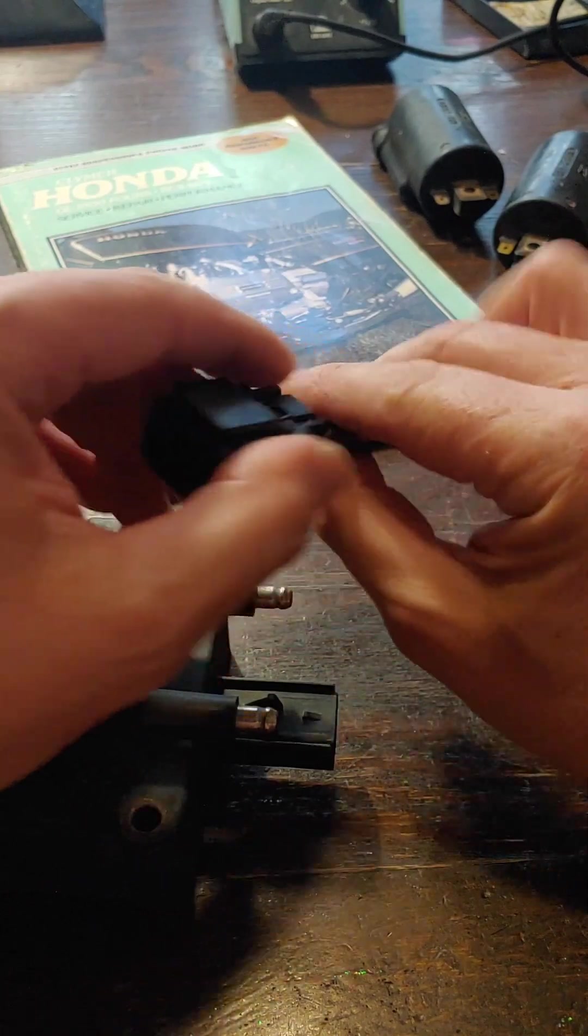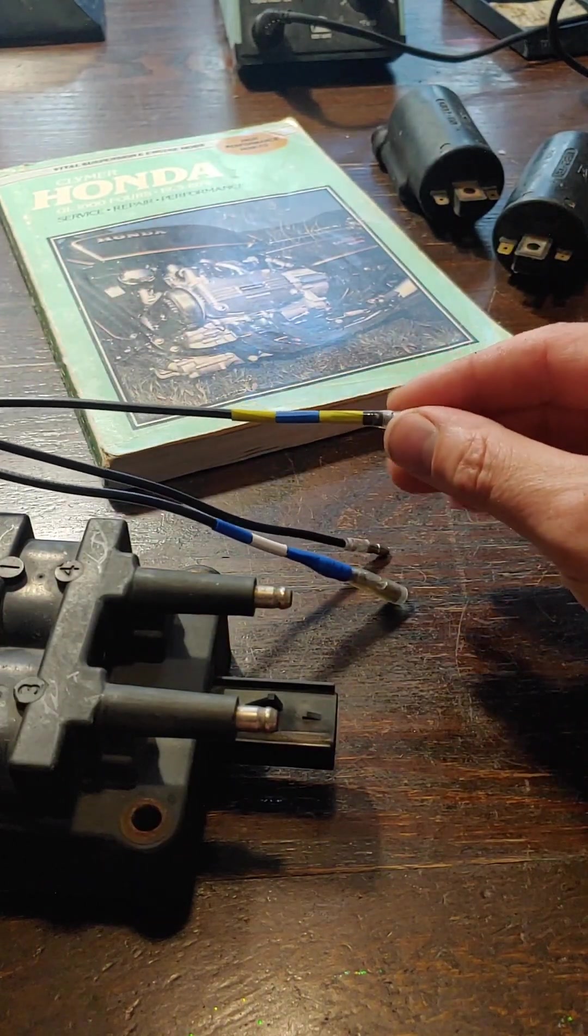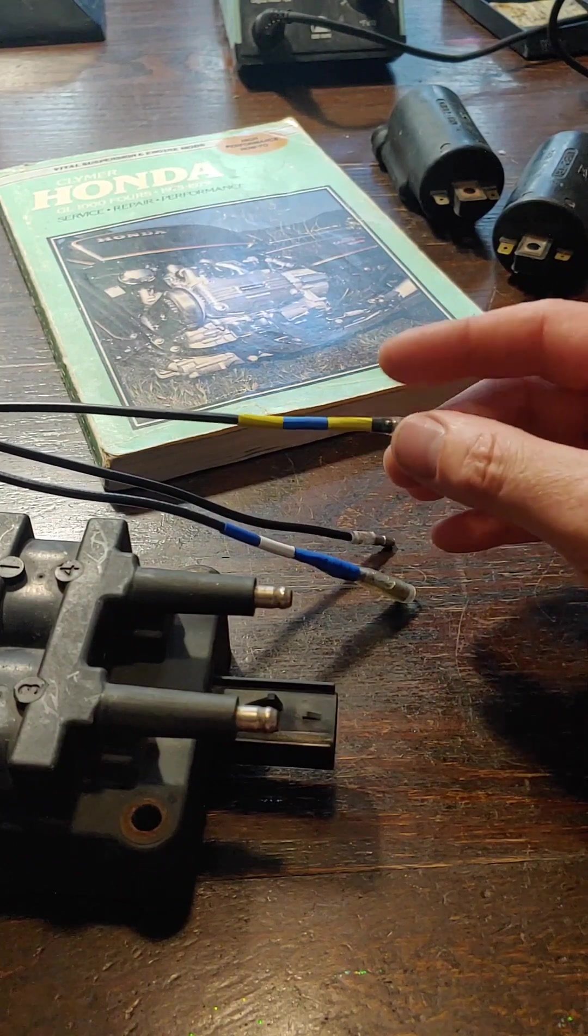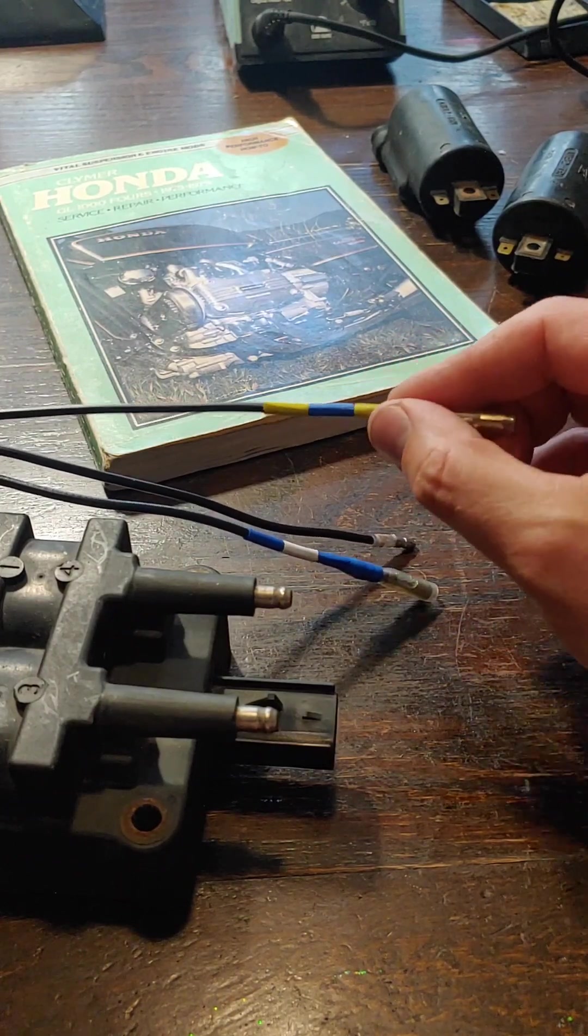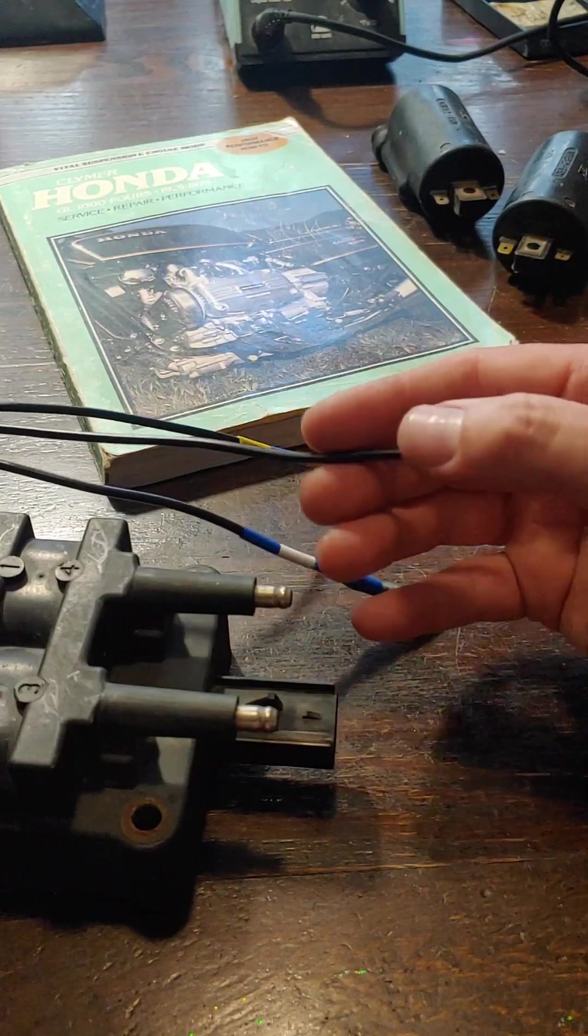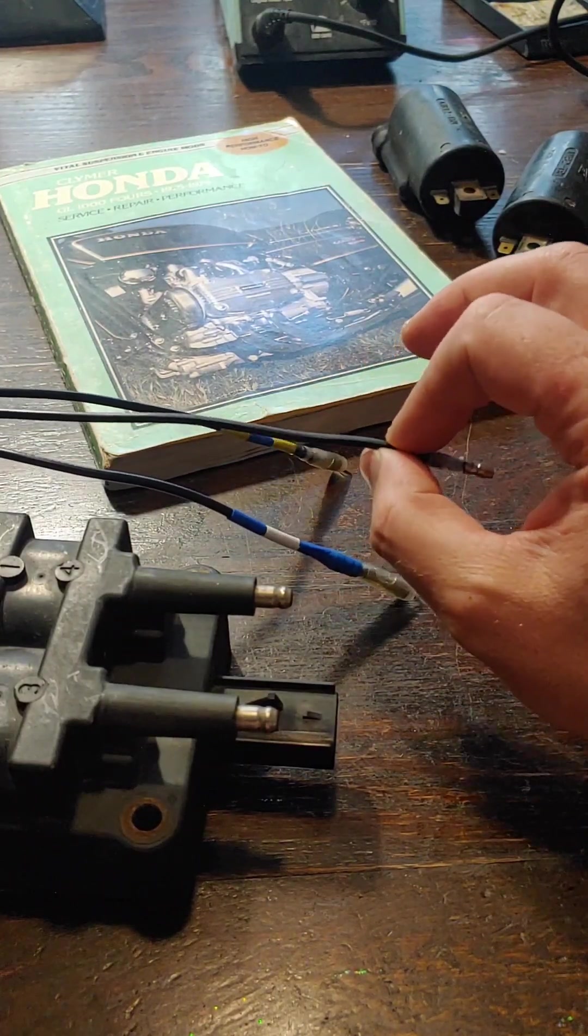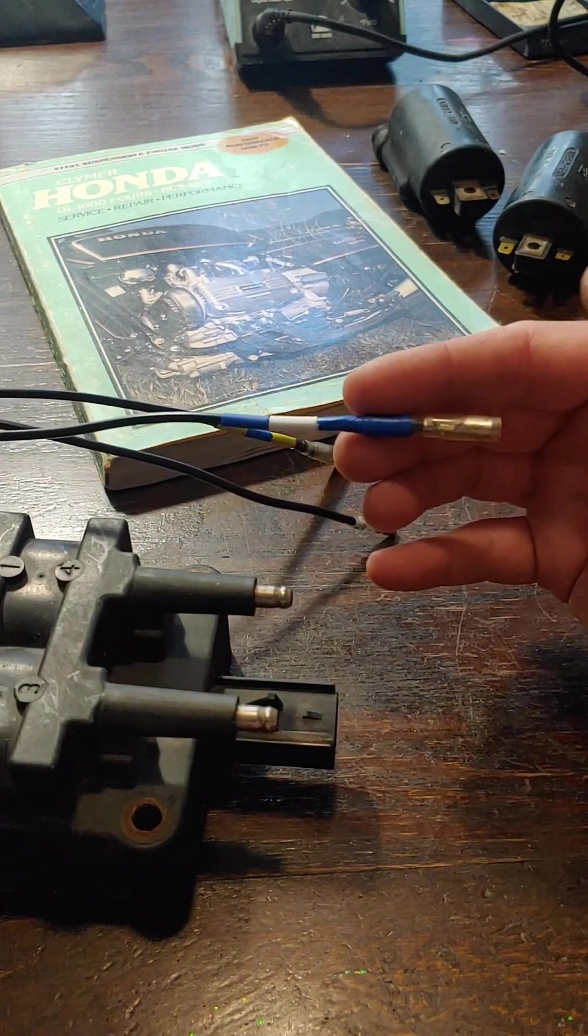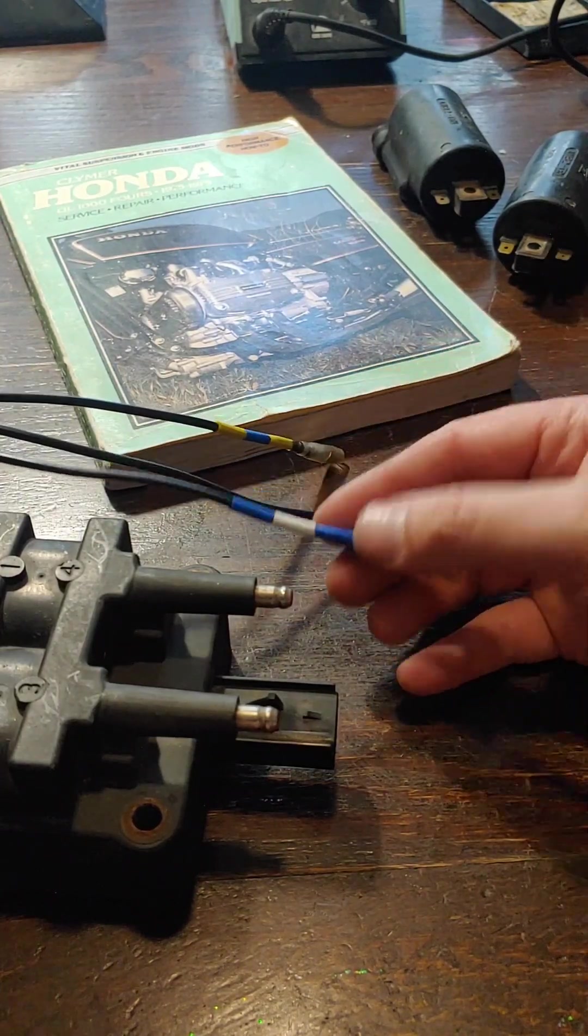And I've got this labeled as my yellow and blue wire - it's going to connect to the harness yellow and blue wire on the Goldwing. Got our center wire which will run two black wires - this is the hot wire. And then we've got our blue and white wire which will connect to the blue and white wire on the harness.